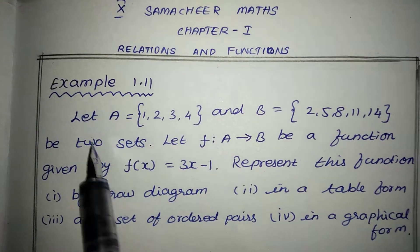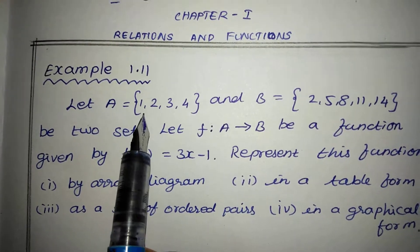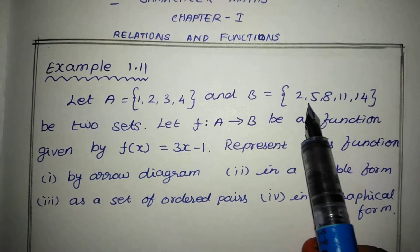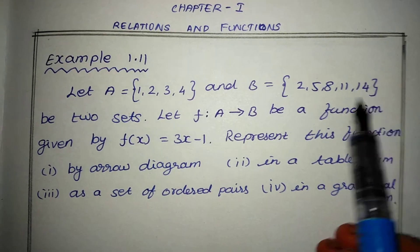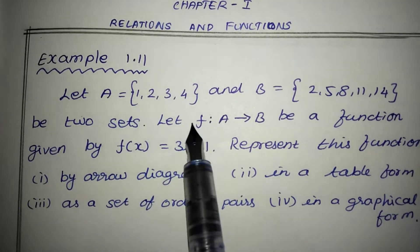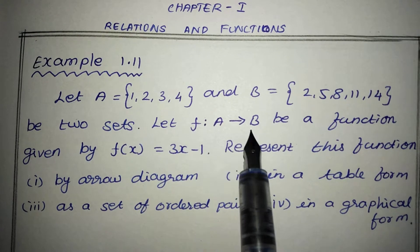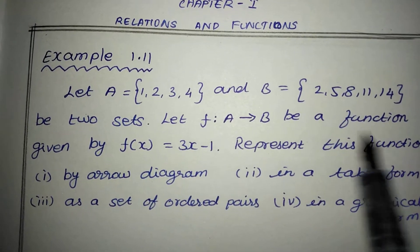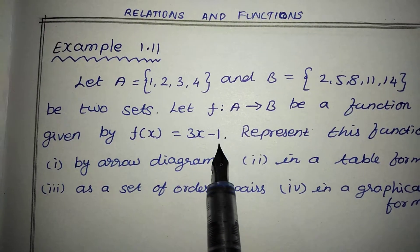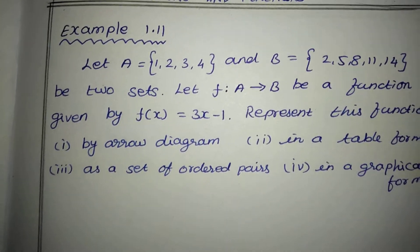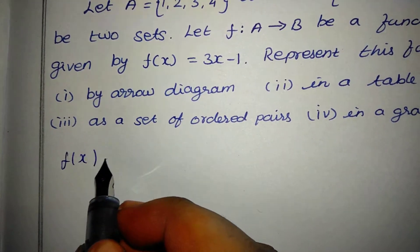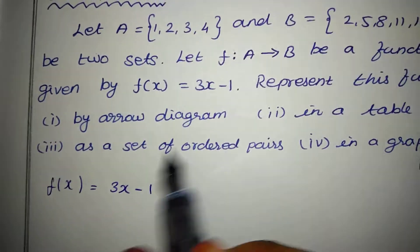Let A = {1, 2, 3, 4} and B = {2, 5, 8, 11, 14} — these are our two sets. Let f: A → B be a function given by f(x) = 3x − 1.